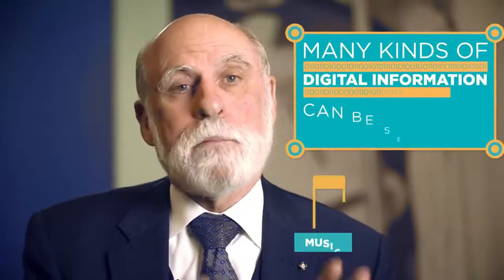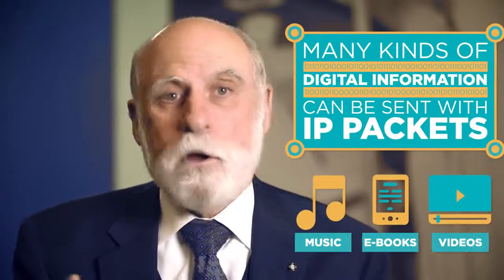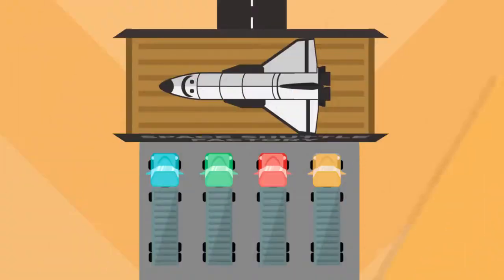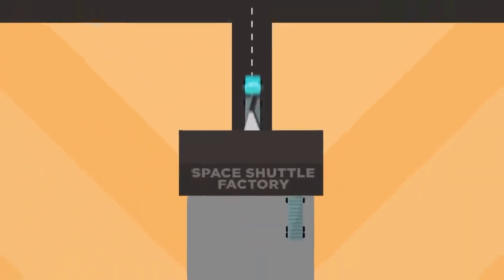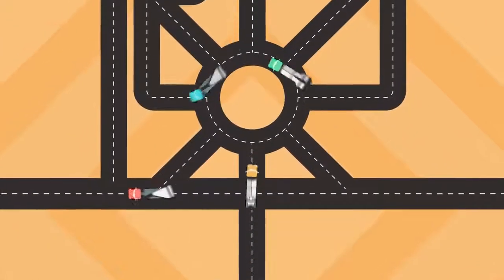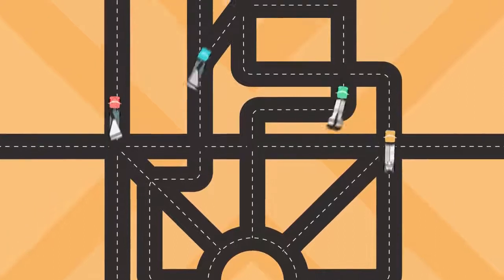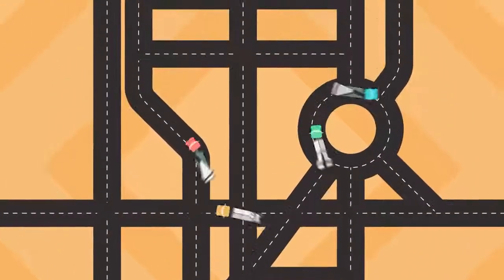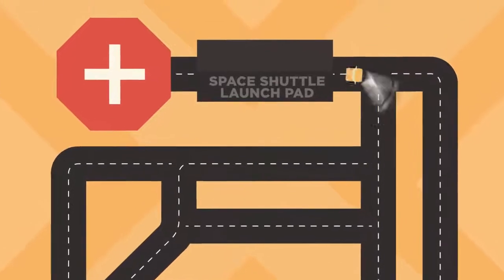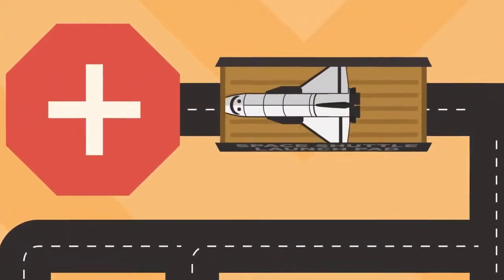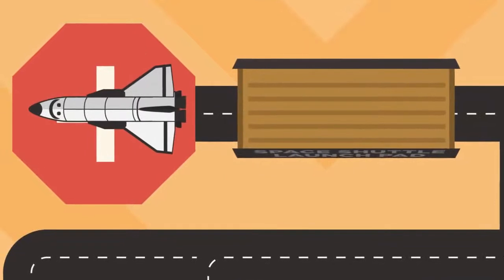And just as you can transport all sorts of stuff inside a car, many kinds of digital information can be sent with IP packets, but there are some limits. What if, for example, you need to move a space shuttle from where it was built to where it will be launched? The shuttle won't fit in one truck, so it needs to be broken down into pieces, transported using a fleet of trucks. They could all take different routes and might get to the destination at different times, but once all the pieces are there, you can reassemble the pieces into the complete shuttle and it'll be ready for launch.